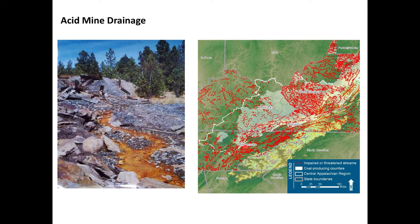On a map of the Appalachian region — Kentucky, Virginia, West Virginia — everything in red represents impaired or threatened streams. All of these streams draining abandoned coal mines are impaired or threatened by acid mine drainage.